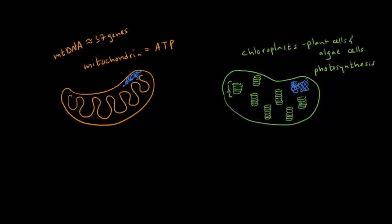If we want to be more specific, you have these stacks called granum. In singular it's granum, plural it's grana. And those granum are made up of these little circles called thylakoids. And photosynthesis happens within these thylakoids.